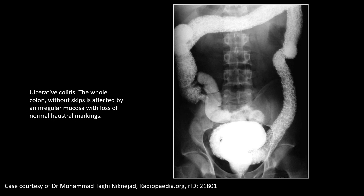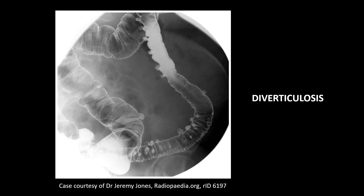Here are some important cases identified by barium enema studies. In the first image, there is no smooth lining and an absence of haustrations of the large intestine, showing a granular appearance — this is because of ulcerative colitis. The whole colon, without skip lesions, is affected by an irregular mucosa with loss of normal haustration markings. In another image, we can see small evaginations from the large intestine — these are diverticulosis.